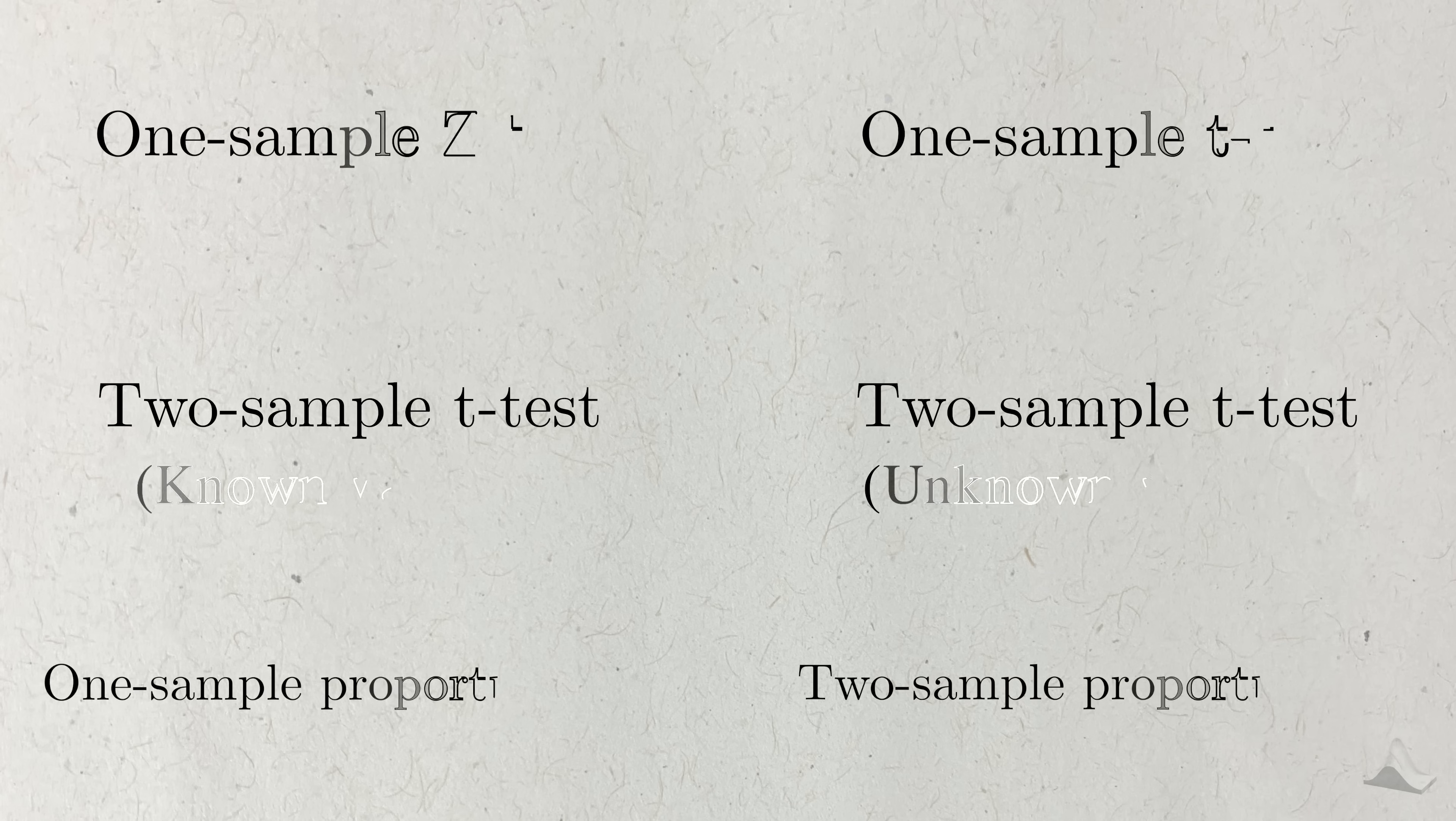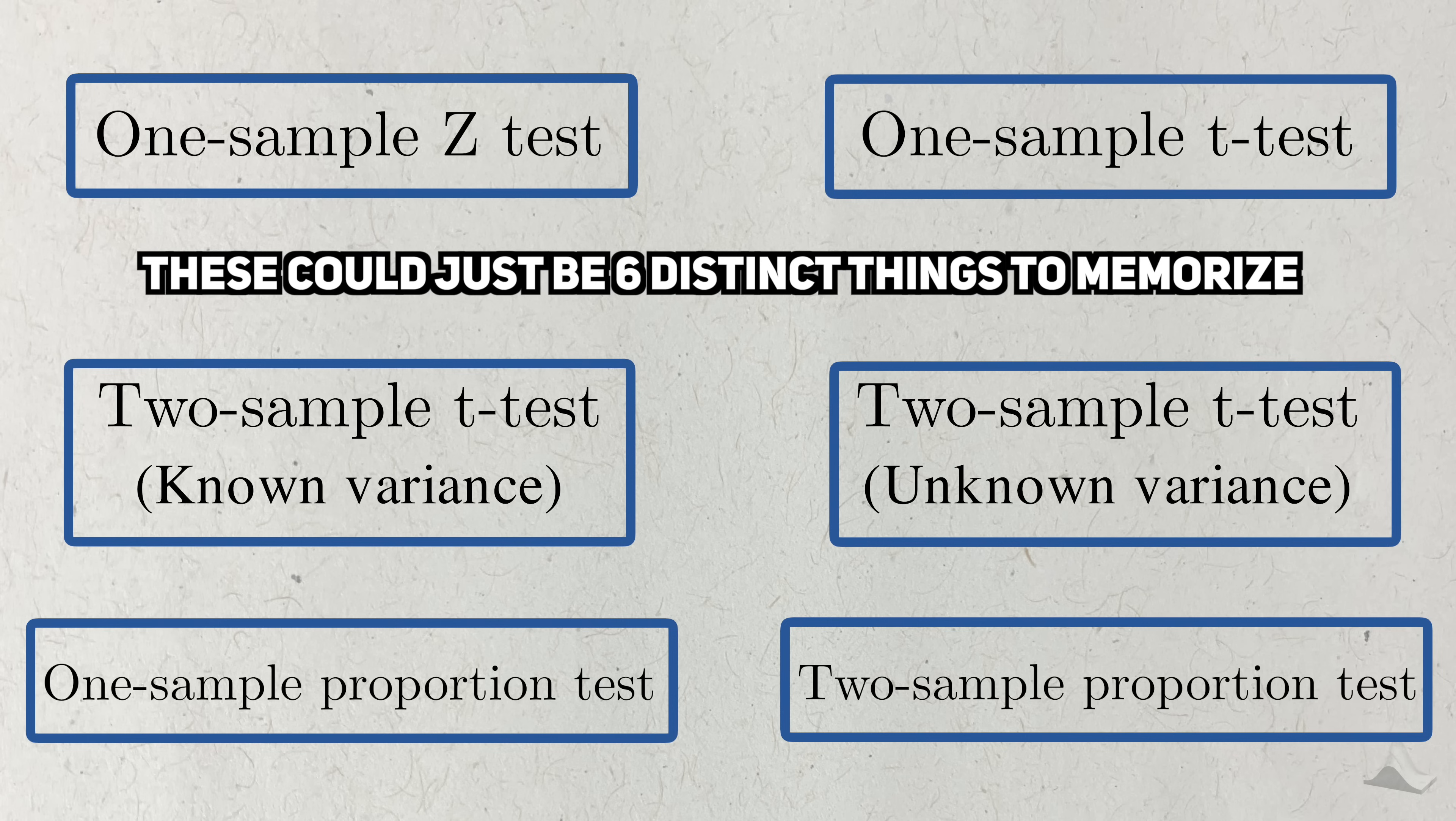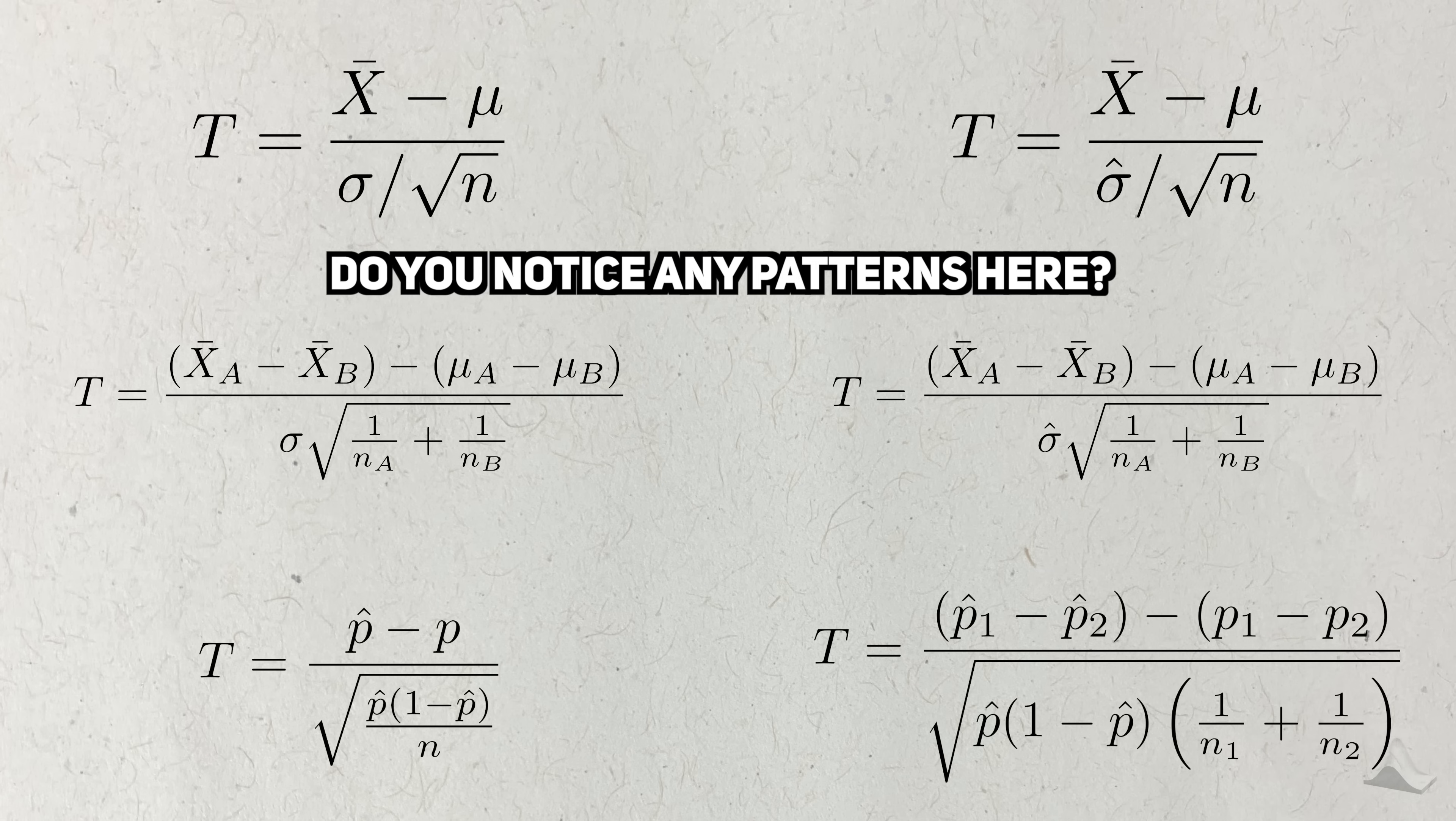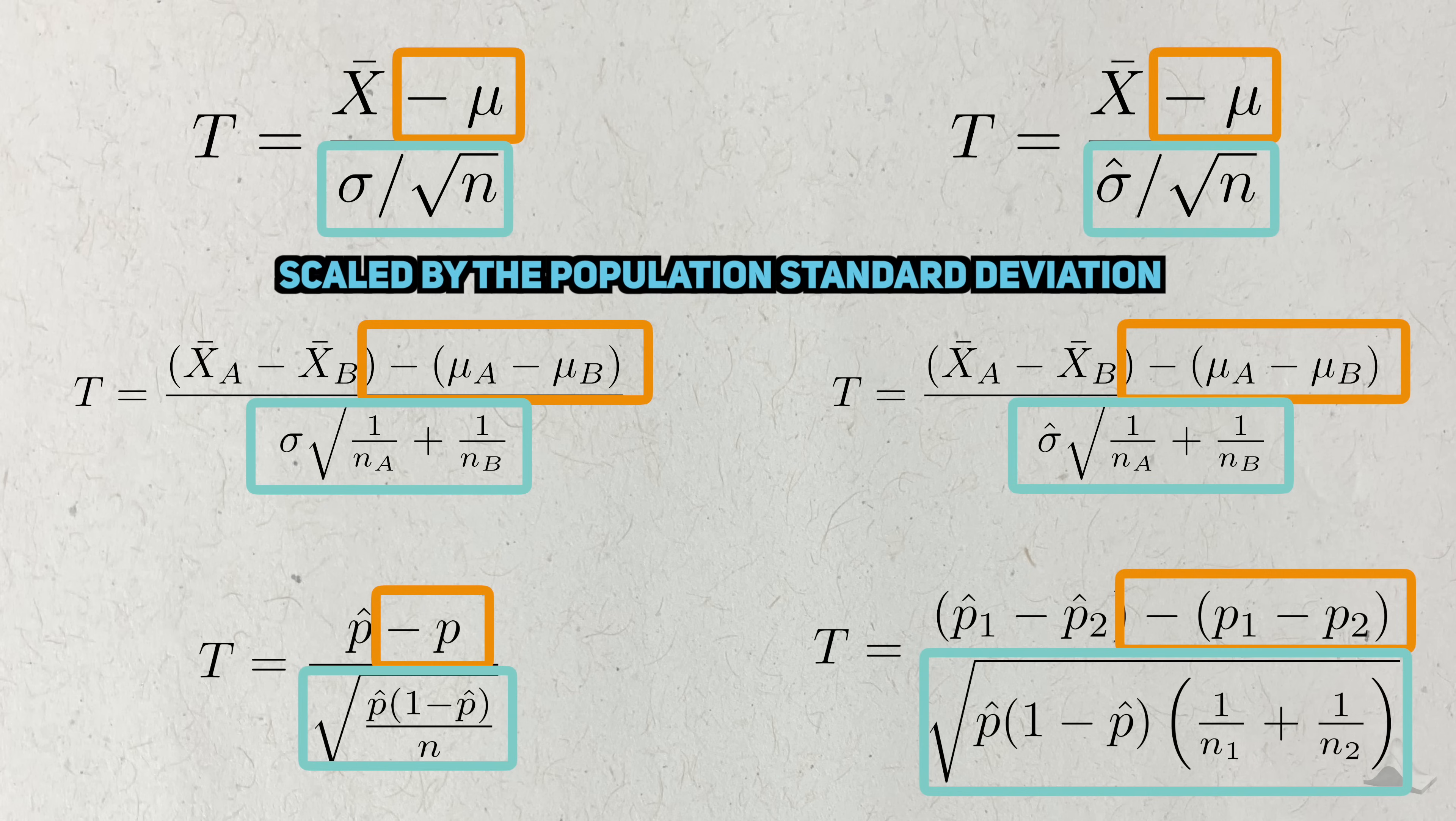Here's a list of the six tests that most people learn in their first statistics class. The one sample z test, the one sample t test, two variants of the two sample t test, and the one and two sample proportion tests. On one hand, you can view these six tests as just six things you need to memorize. But check this out. Here's the test statistic you need to calculate for each of them. Do you notice any patterns here? They all have a similar form, where the estimator is centered by the population mean and divided by the population standard deviation.